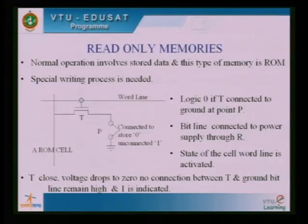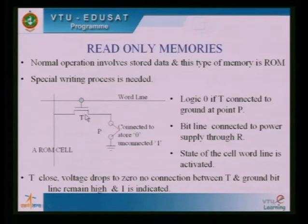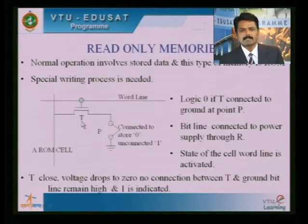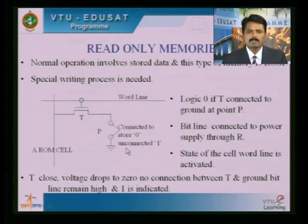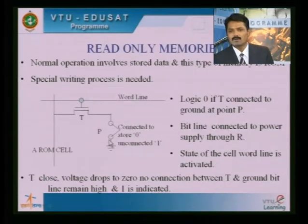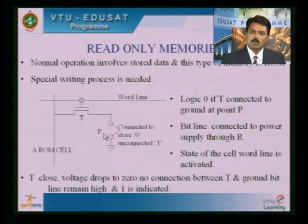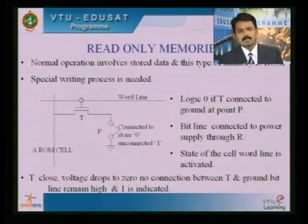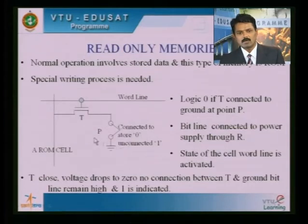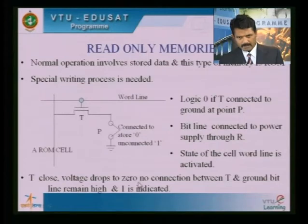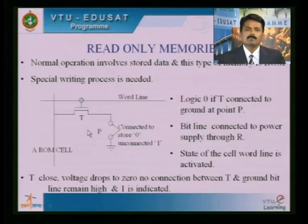Such memories are read-only memories where data is stored permanently. Normal operation involves only reading the stored data. In ROM, a memory cell consists of a transistor and a connection point: if the point is shorted to ground, a bit 0 is stored; if it is open, a bit 1 is stored. When the transistor is open, the bit line remains high and 1 is indicated. This is the simple structure of a ROM memory cell.